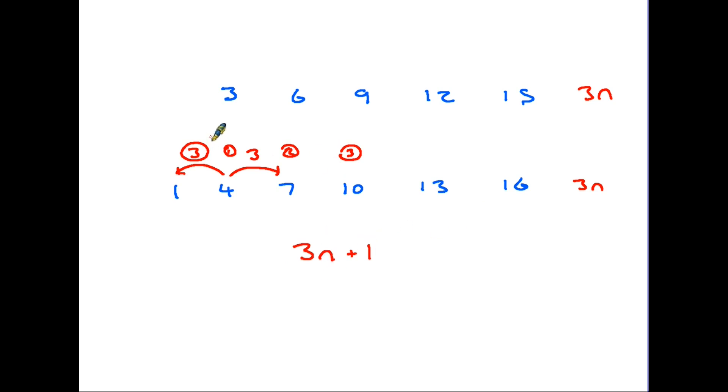If you think about it it makes sense because if this is 3n the second has to be 3n because the gaps are the same. But in the second sequence each number is plus 1 from the top sequence. Therefore 3n plus 1. Let's have a look at another example.